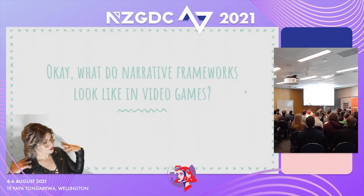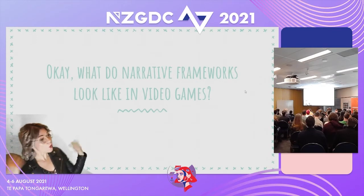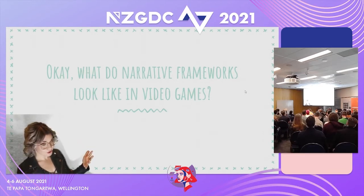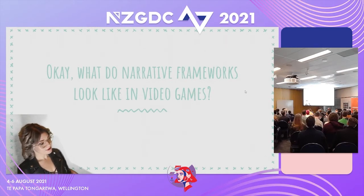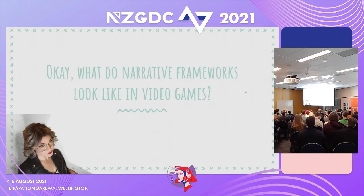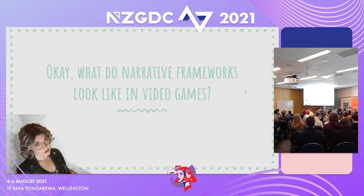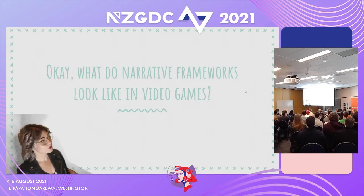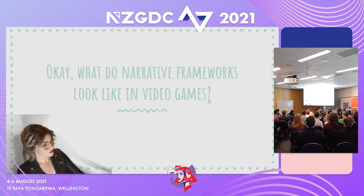We've discussed what a narrative framework is and why you want to use them. So what do they look like in video games? There is a big difference between video games and other more traditional forms of media. Most of the information you'll find online about narrative structure refers to traditional forms like movies, TV, comic books, literature, and radio. However, games have a very different and unique set of affordances, which means our frameworks need to cover more bases and we need to be broader and more careful when we make them.